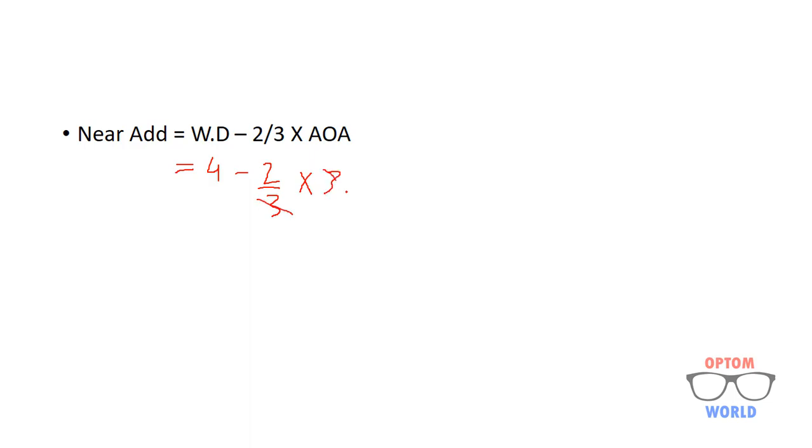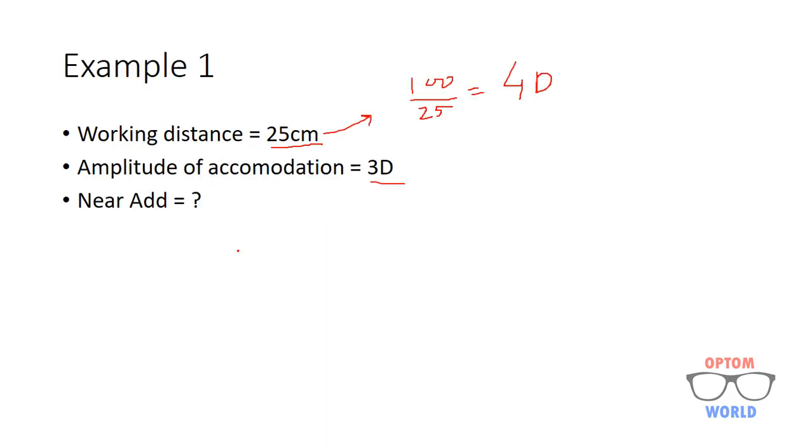By solving this, I will get 4 minus 2, which is 2 diopters. So, the estimated near-add for that particular case is 2 diopters.